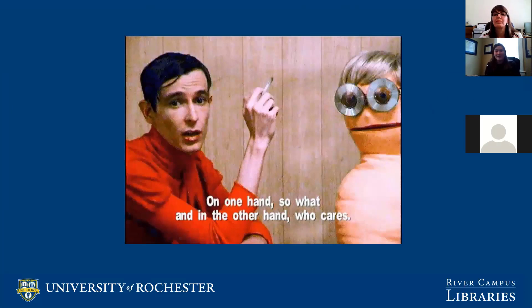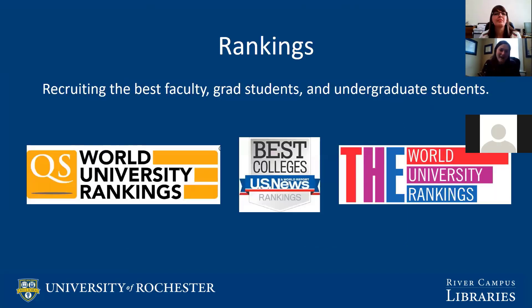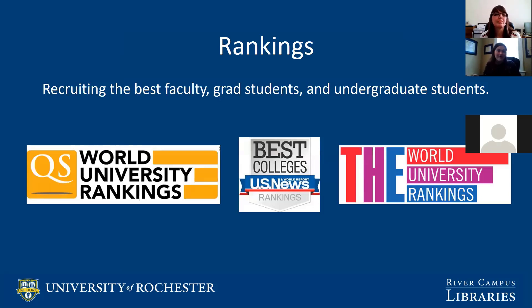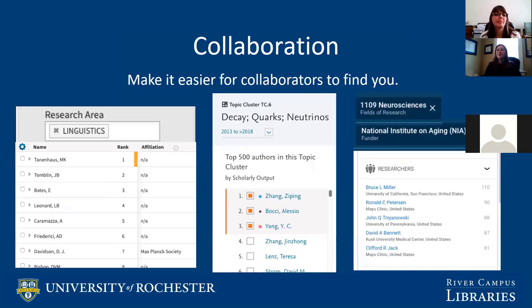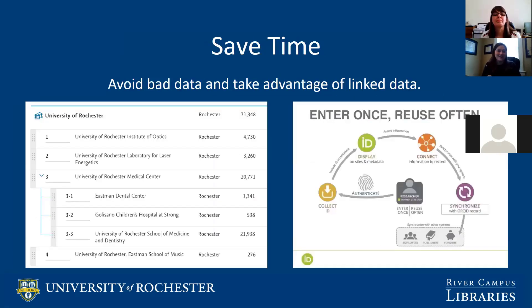With metrics, why should you care? Rankings are determined by metrics. While not critical on the individual level, it does influence how the University of Rochester appears and helps attract the best colleagues and faculty. Metrics also help you be the person people want to find when looking for an expert in your area. And it saves time — using ORCID, we can validate data, make systems behave correctly, and share accurate information so those systems update themselves properly.